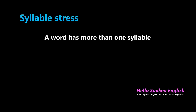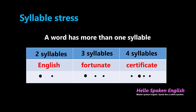If a word has more than one syllable, there will be stressed and unstressed vowels. For example, 'English' has two syllables and you need to stress the first vowel: EN-glish. 'Fortunate' has three syllables and you have to stress the first vowel: FOR-tunate — not for-TU-nate or for-tu-NATE. 'Certificate' — you have to stress the second vowel: cer-TIF-i-cate.